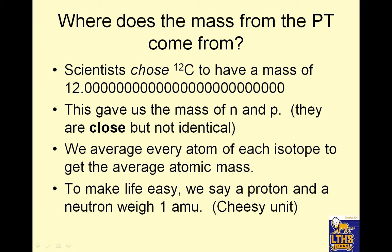Where does the mass of the periodic table come from? Okay. Now there's that decimal number we've ignored so far. Scientists chose carbon 12. Every living thing has carbon in it. 12 is the most common isotope of carbon. To have a mass of 12.000000 repeating. This gave us the mass of a neutron and a proton. They are close, but not identical. We average every atom of each isotope to get the average mass. To make life easy, we say a proton and neutron weigh one atomic mass unit. Notice how they're close, but not identical. This says that's identical enough for me.